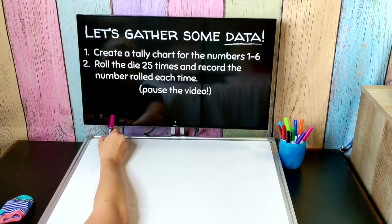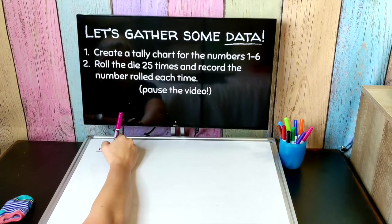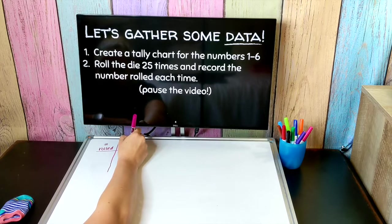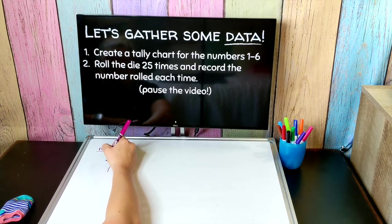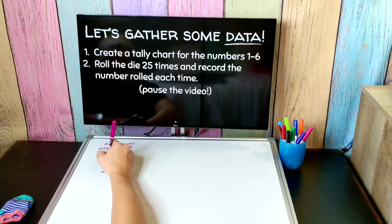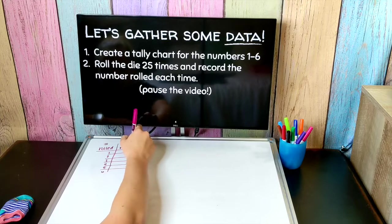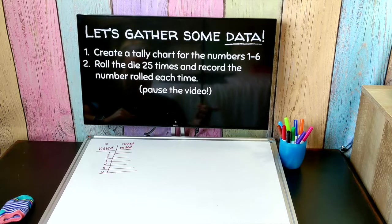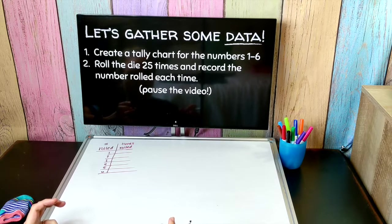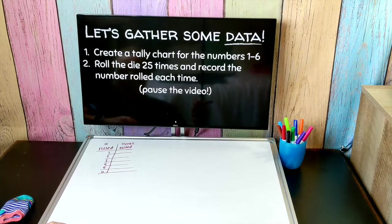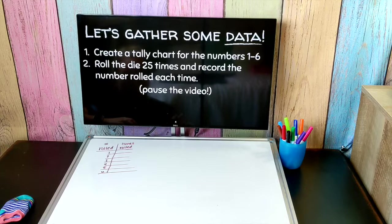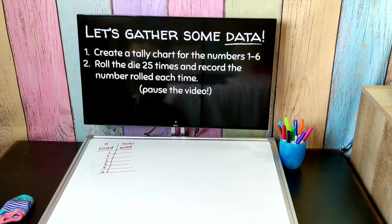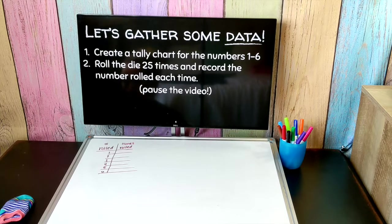So we're going to do our number rolled and the number of times it was rolled. I could roll a one, two, three, four, five, or six. This is where your lined paper comes in handy. You're going to roll the die 25 times and every time you roll it I want you to put a tally mark next to the number that you rolled. Go ahead and pause the video and generate your data.